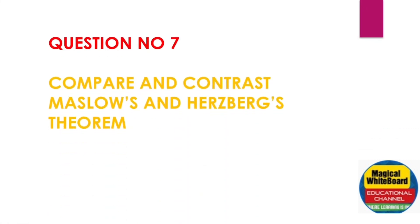Question Number 7: Compare and contrast Maslow's theory and Herzberg's two-factor theorem. In these theories, you need to do detailed discussion and explanations of both Maslow's hierarchy of needs and Herzberg's theorem.